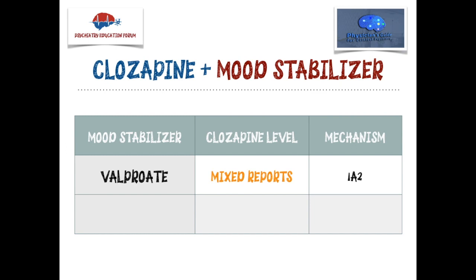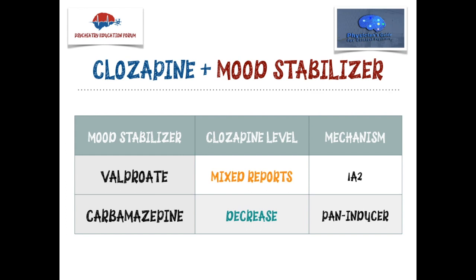The other cases I found were for carbamazepine — two case reports. We all know that carbamazepine is a pan-inducer of most cytochrome P450 enzymes, so it will cause a reduction in clozapine levels, not an increase. I also found two case reports for lamotrigine and clozapine interactions, with a likely mechanism through UGT1A4, but the data was not very strong. I also found two case reports for phenytoin. I will focus more on valproate and carbamazepine as key cautions when prescribing clozapine.